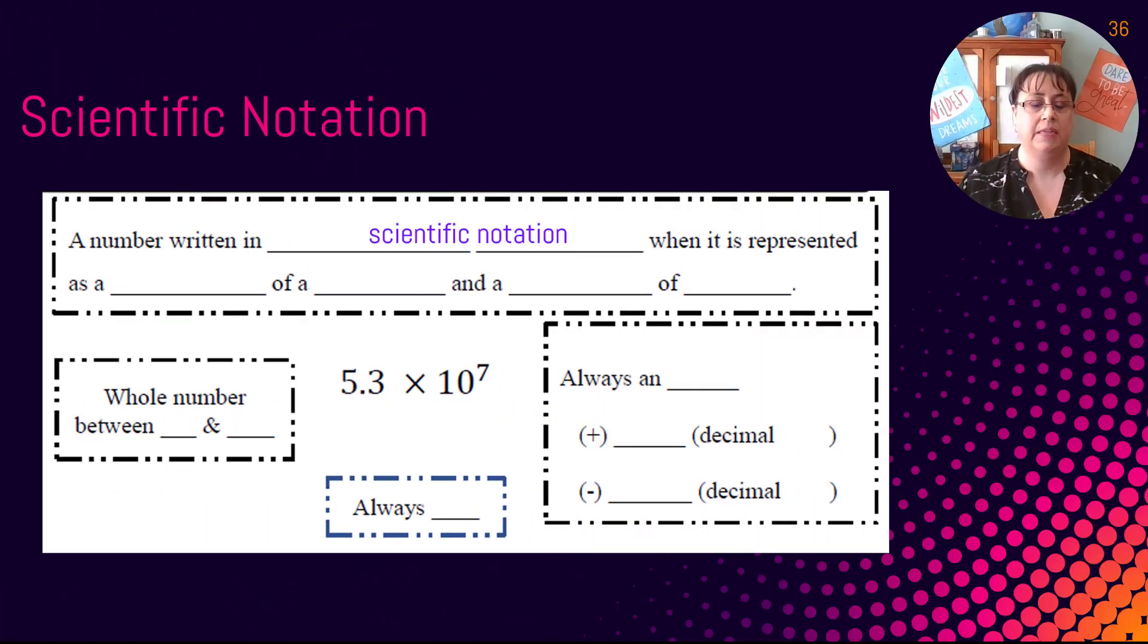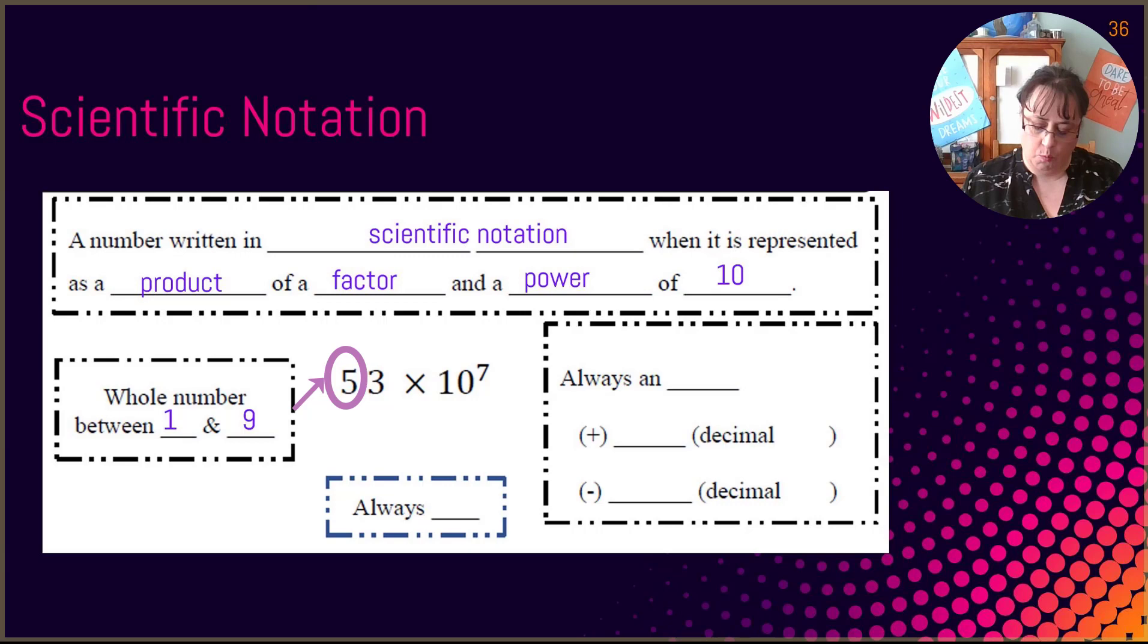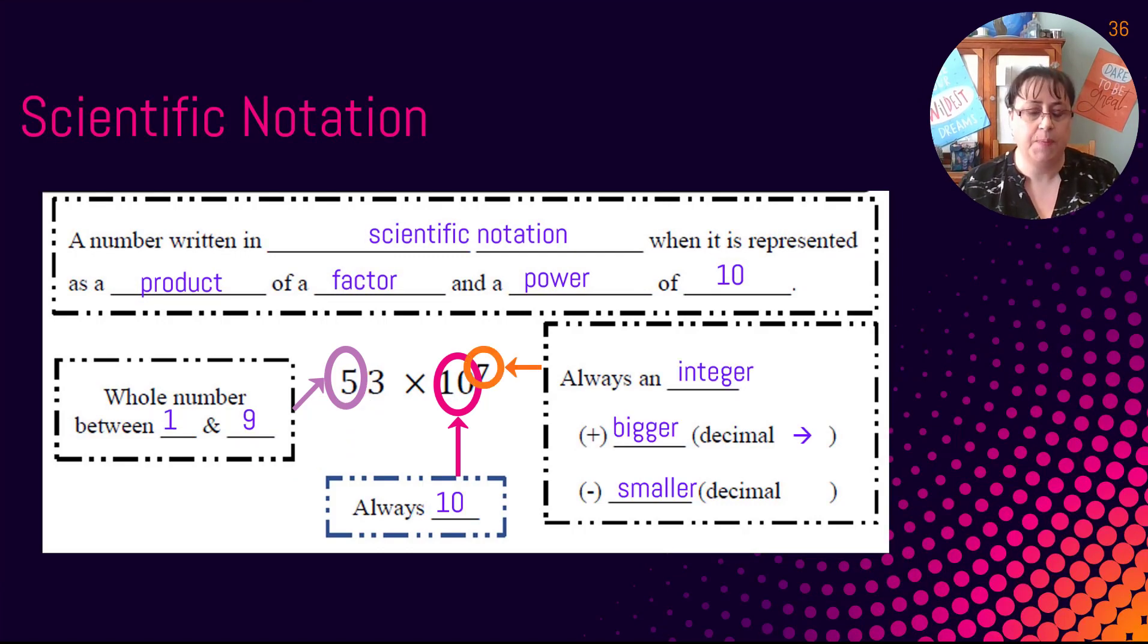To begin with, a number is written in scientific notation when it is represented as a product of a factor and a power of 10. When we are looking at scientific notation, like 5.3 times 10 to the 7, there are some components of it. We begin with that 5.3. It is a whole number between 1 and 9. When we say that whole number, what I am talking about is what is before the decimal place. I always want that to be between 1 and 9.